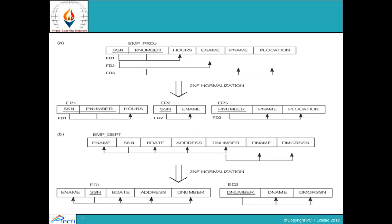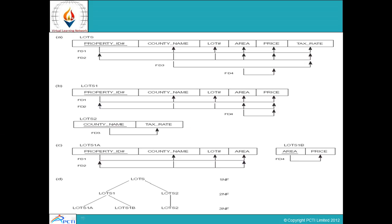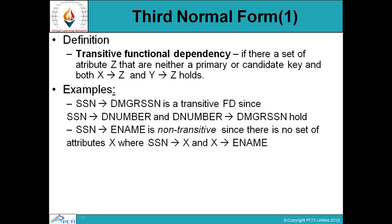That was about second normal form. Next, we cover the third normal form. As with the third normal form, data must pass through second normal form first. The third normal form deals with transitive functional dependency.